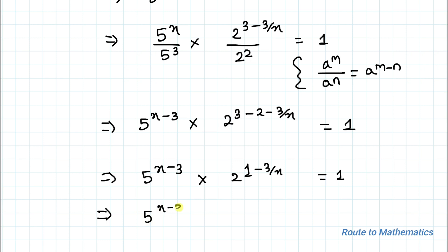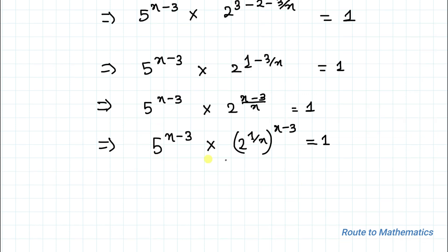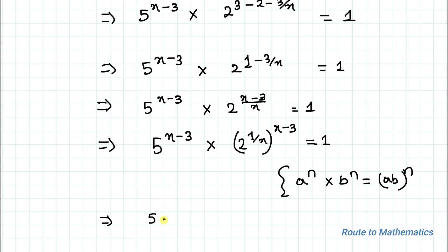This implies 5 to the power x minus 3, multiplied with 2 to the power (x minus 3) divided by x, which can be written as 2 to the power 1 by x, whole to the power x minus 3, equals 1 by applying the a to the power mn formula. Here you can see that the bases are different but the powers are the same. We apply the exponential rule that a to the power n multiplied with b to the power n equals ab whole to the power n, giving us 5 multiplied with 2 to the power 1 by x, whole to the power x minus 3, equals 1.